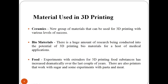Another material used in 3D printing is ceramics. Ceramics are a relatively new group of materials that can be used for 3D printing with various levels of success. The higher-end printers can use various powder-based materials to create 3D objects. These materials can include polyamide, which is a strong and flexible material that allows a high level of detail to be achieved. Polyamide objects are constructed from a white, very fine, granular powder.